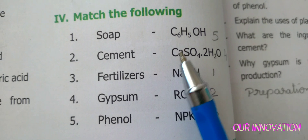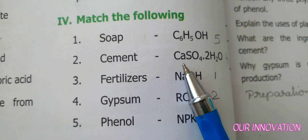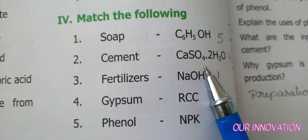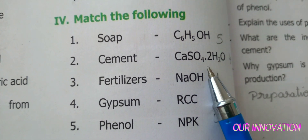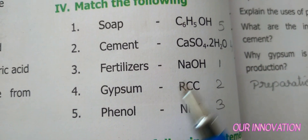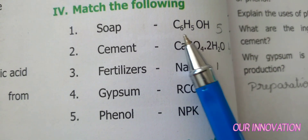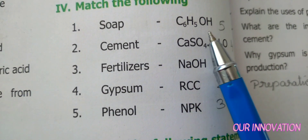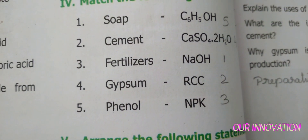Continuing match the following: Gypsum — CaSO4·2H2O, Phenol — C6H4OH.